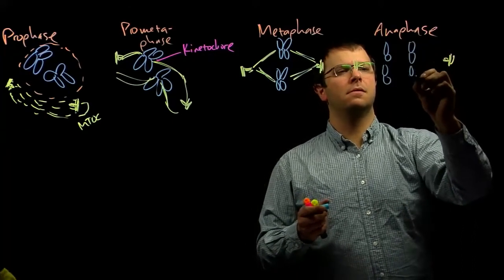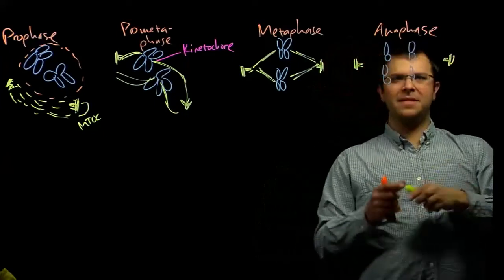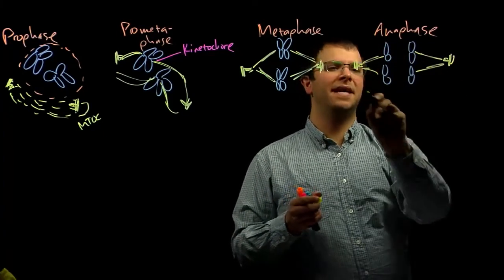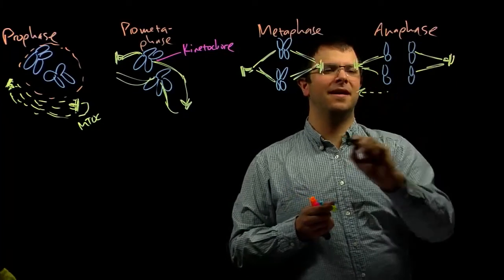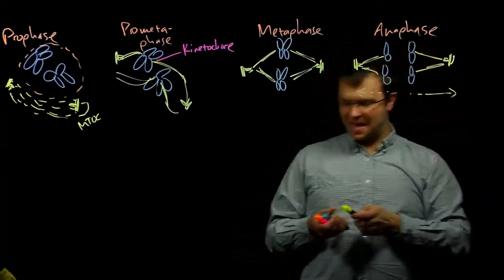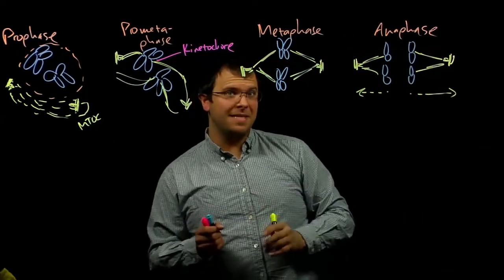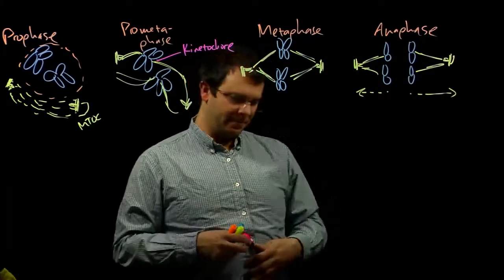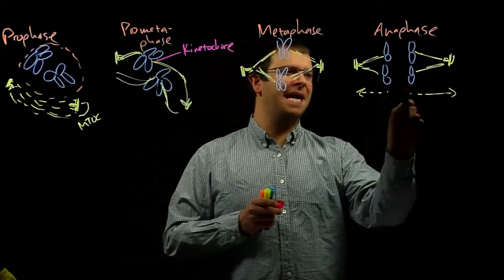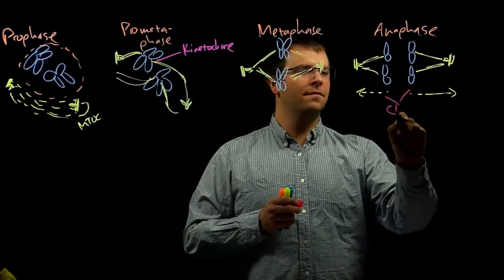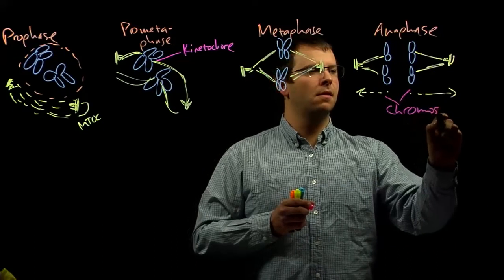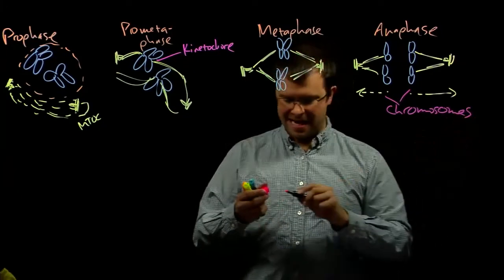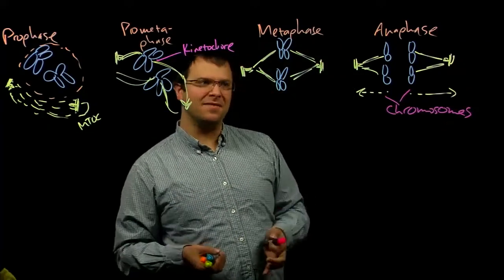Now each chromatid is headed to one side of the cell. These chromatids are headed this way, these chromatids are headed this way. Except now they're not chromatids anymore. Now they've become chromosomes. This is the step where we go from chromatids back to chromosomes. They're independent pieces of DNA now.